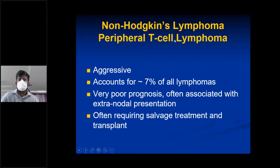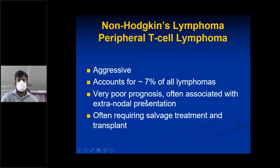Peripheral T-cell lymphoma is aggressive. The T-cell type accounts for 7% of all lymphomas. It has very poor prognosis, is often associated with extranodal presentation, and often requires salvage treatment and transplant.